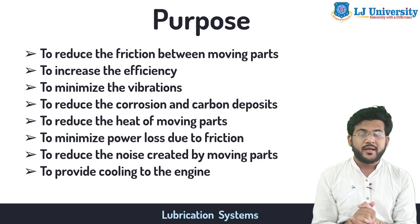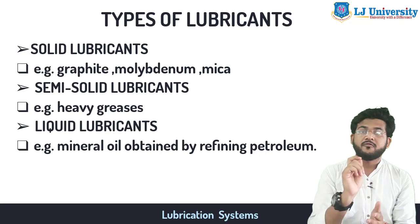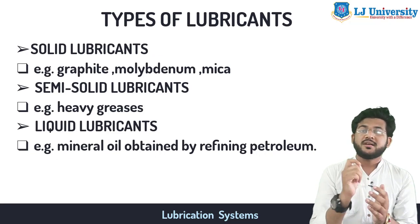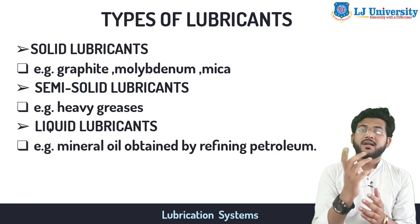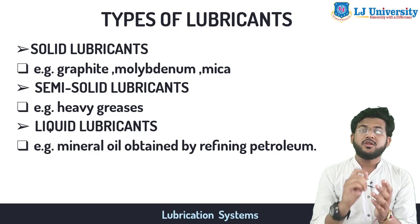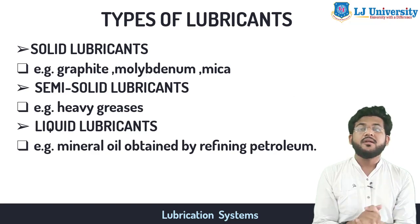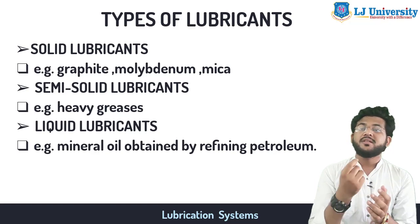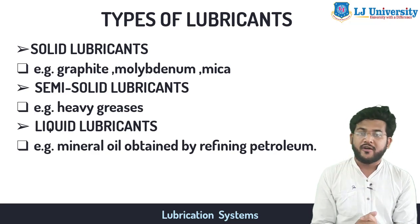Now let us see the types of lubricants. There are basically three types. One is solid lubricants — graphite or mica. Thereafter, semi-solid lubricants, which are called heavy grease. And then liquid lubricants, which are actually mineral oils coming from refining petroleum.